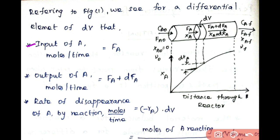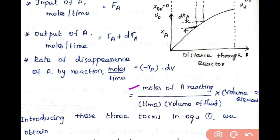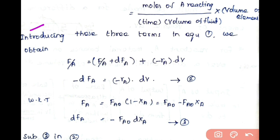We now evaluate each term in Equation 1. Input of A in moles per time = FA. Output of A in moles per time = FA + dFA. Rate of disappearance of A by reaction = (−rA)·dV, because we calculate the rate only for the differential volume dV, not the whole reactor. Here −rA has units of moles of A reacting per time per volume of fluid, and dV is the volume of the differential element.